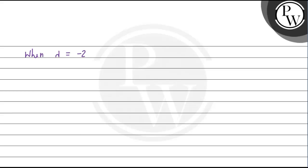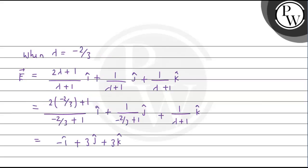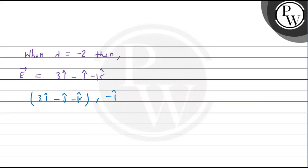When λ = −2, vector E equals 3î − ĵ − k̂. When λ = −2/3, vector E equals −î + 3ĵ + 3k̂. Our final answers are these two position vectors. Hope you understand — best of luck!